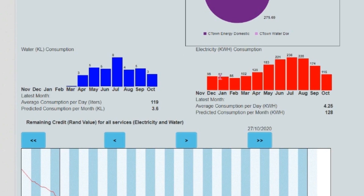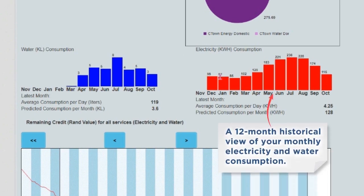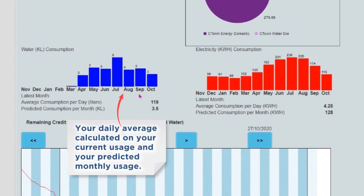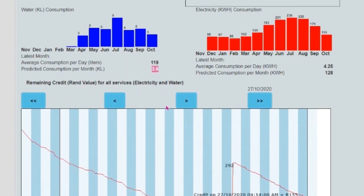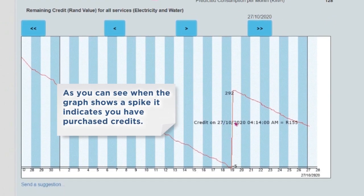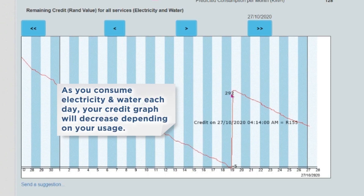Scrolling down, you are able to view the following: a 12-month historical view of your monthly electricity and water consumption, your daily average calculated on your current usage, and your predicted monthly usage. The graph below is your remaining RAND value credit graph. When the graph shows a spike, it indicates you have purchased credit. As you consume electricity and water each day, your credit graph will decrease depending on your usage.